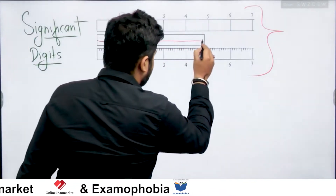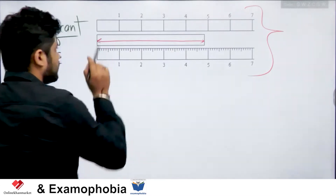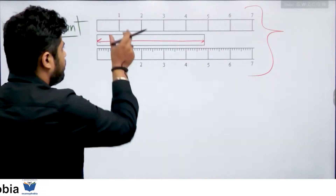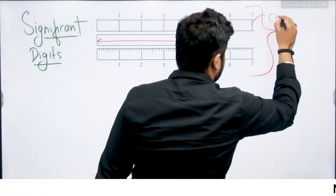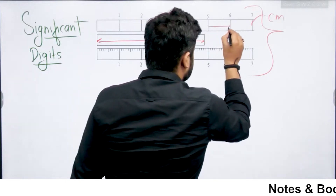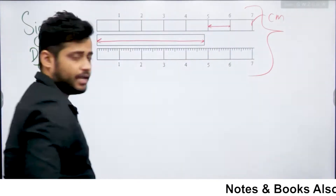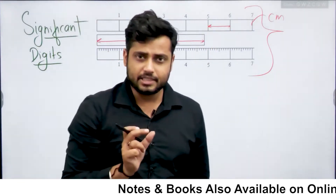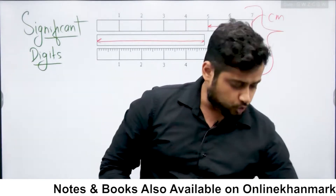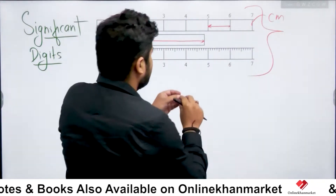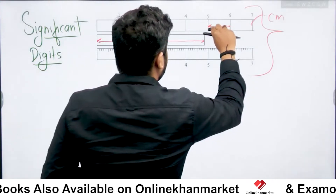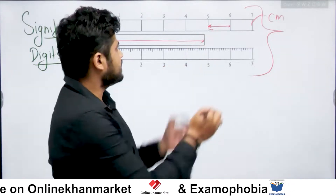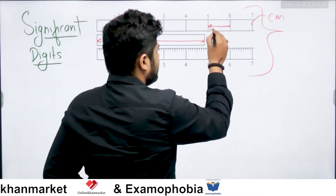Voh limitation kya hai? Jo limitation aapki measuring instrument ki hai, vohi limitations aapki measured value mein bhi reflect hongi. Jaise ki, agar hum is object ki length measure kar rahe hain, aur hamare paas 2 scales hain is length ko measure karne ke liye. Pehla scale centimeter scale hai, aur is ke andar jo exact hum length measure kar sakte hain woh 1 cm ki hai. Yeh scale at best 1 cm measure kar sakta hai. Agar koi object is length se chhota hai, to length of this cap would be less than this size, jo ki is scale ka least count hai.